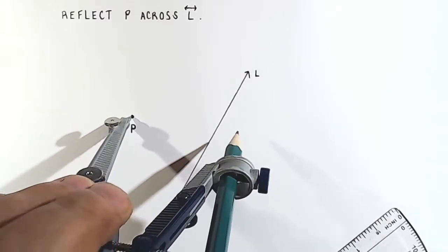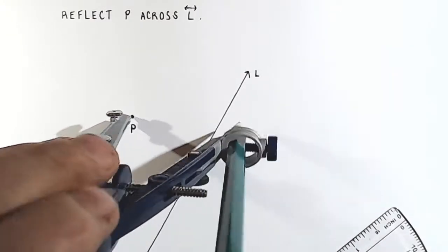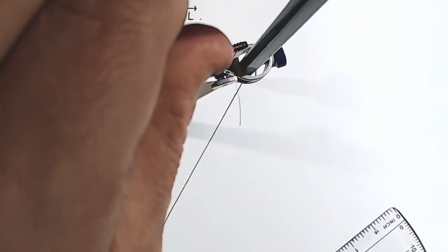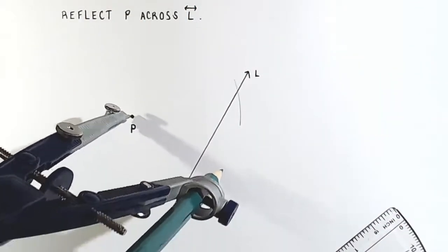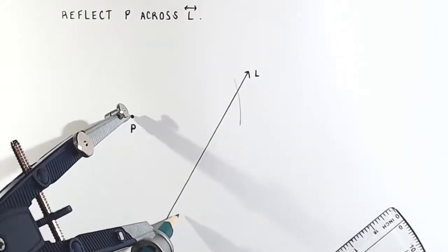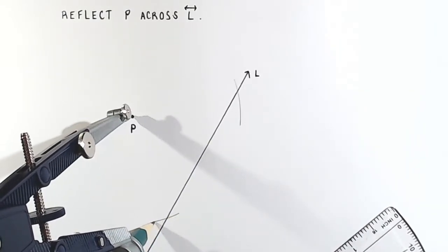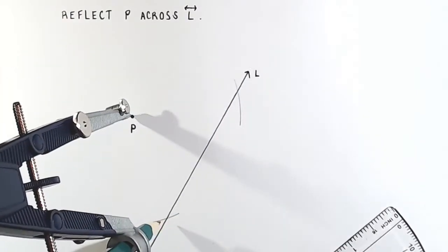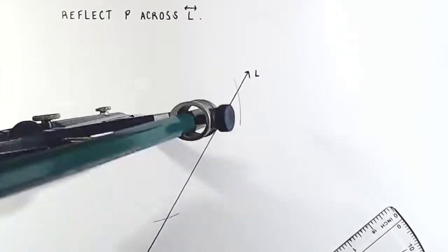And what we're going to do is rotate an arc until we're crossing line L and then also rotate another arc where we're crossing line L in a different place. So two places need to be crossing line L.